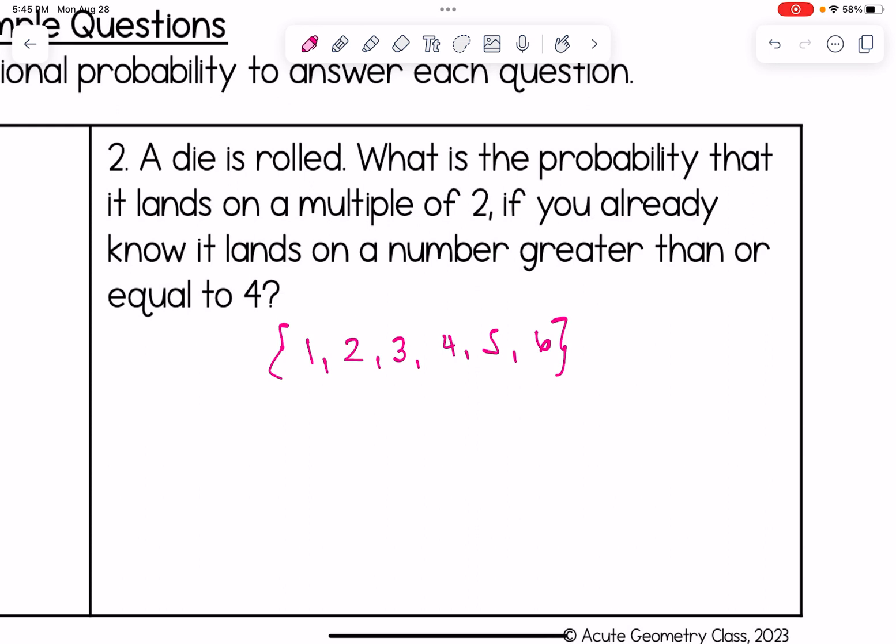If we know that, and we're given that it's greater than or equal to four, we know it doesn't land on one, two, or three. So now we want to know what's the probability it is a multiple of two. Four and six are multiples of two. That's two of the three elements. So 2/3.